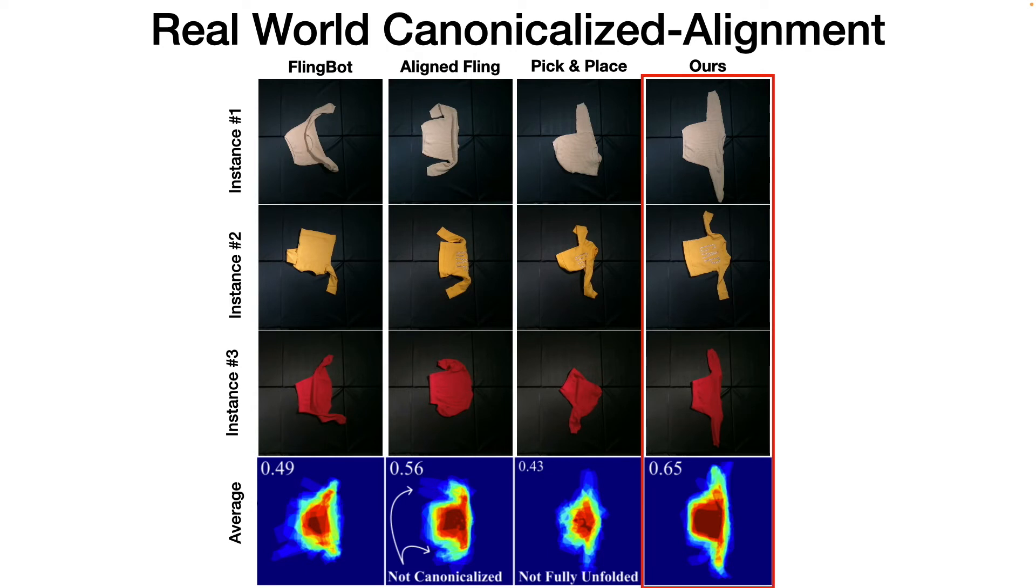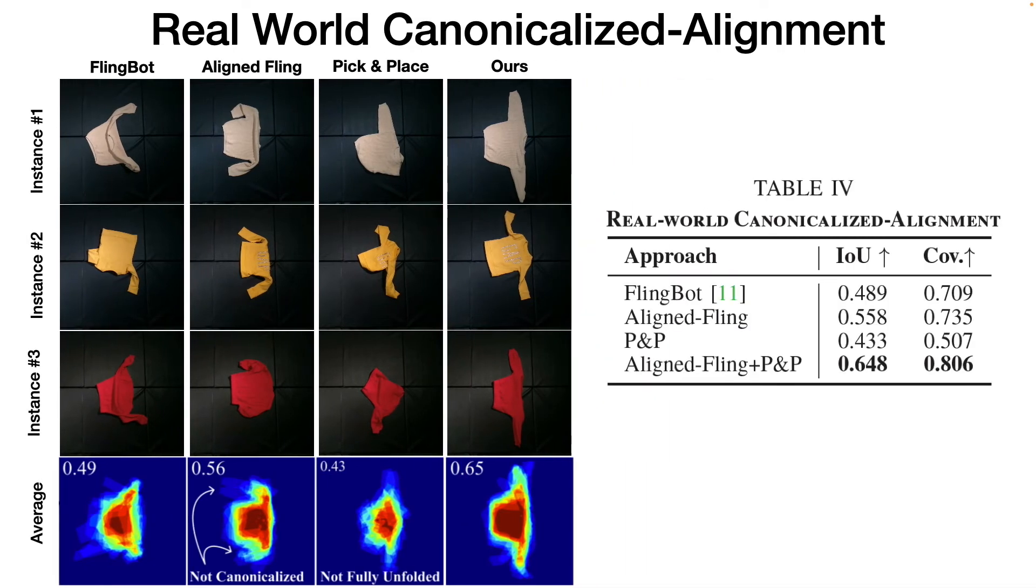In contrast, our method combines both Fling and Pick and Place, as well as our novel reward formulation to achieve efficient canonicalization, outperforming the baselines in terms of both IOU with the gold mask as well as coverage.